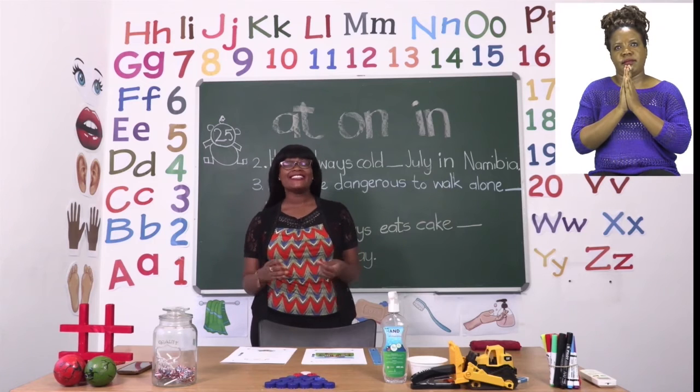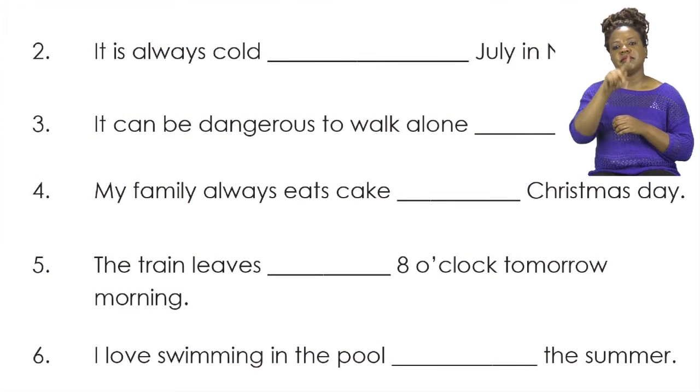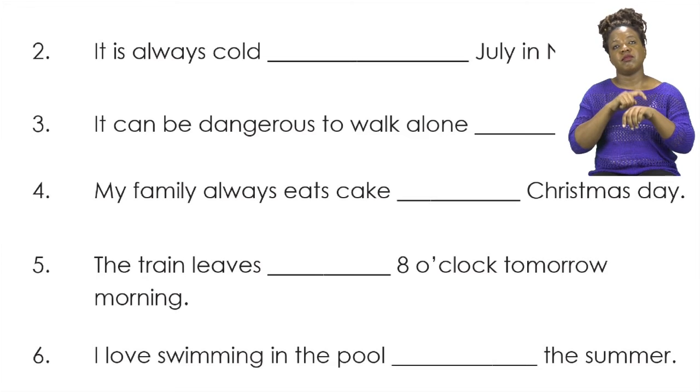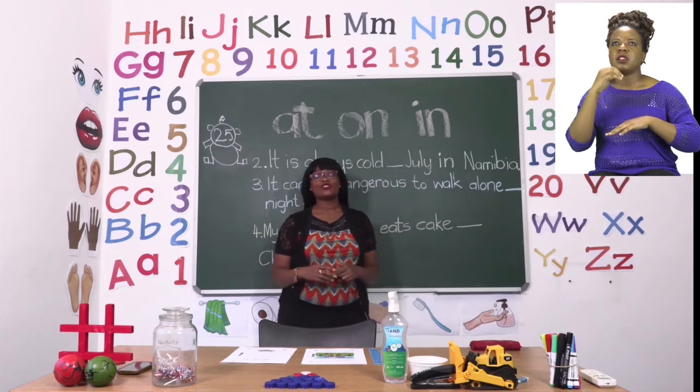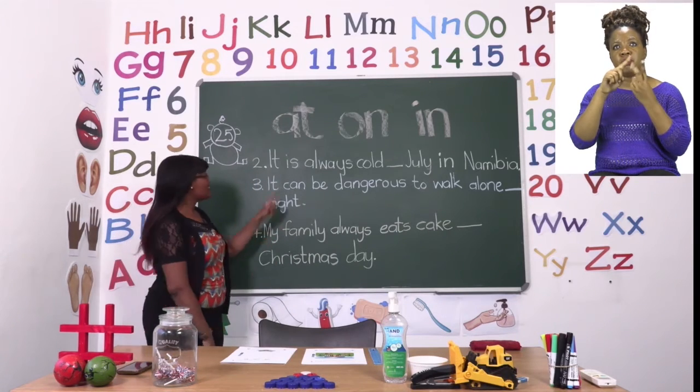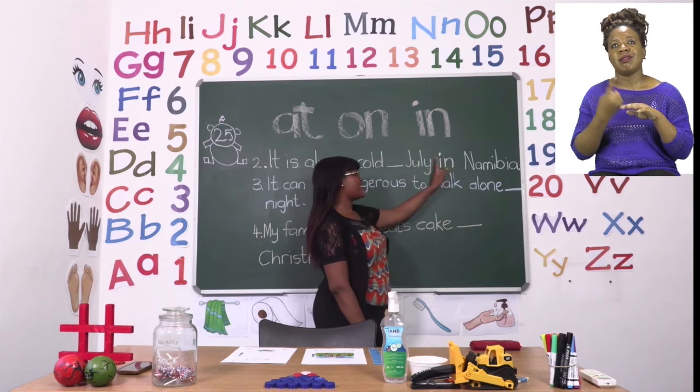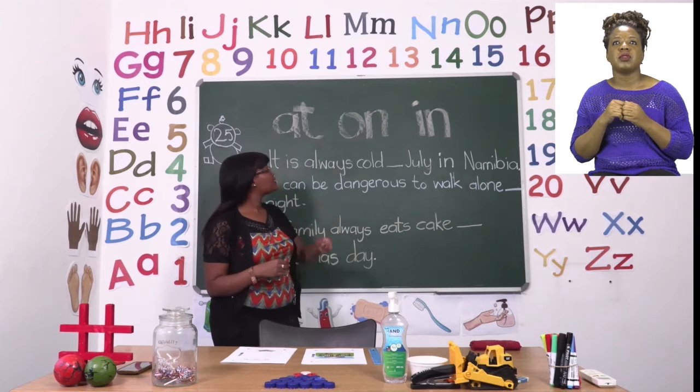Now boys and girls we're going to end our lesson by going to page 25. On page 25 we're going to do prepositions but not just any prepositions, we're going to be doing time prepositions. We're going to be focusing on number two, three and four. The prepositions of time that we're going to be using today are on the board so let's take a look. We have at, on and in. It is going to be our job to choose among the three of them. Number two says it is always cold dash July in Namibia. We now need to know which preposition of time. Is it at, is it on or is it in?